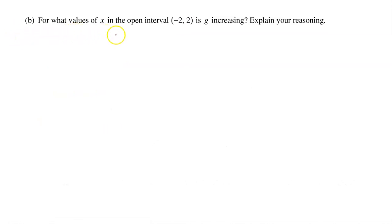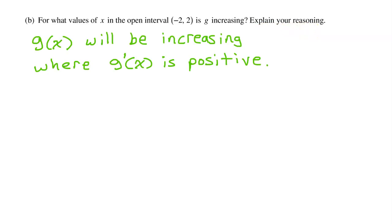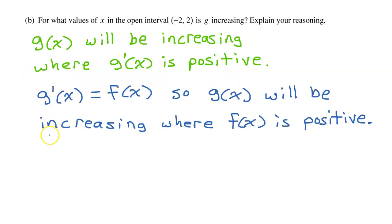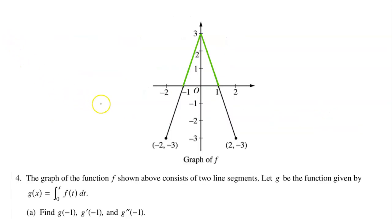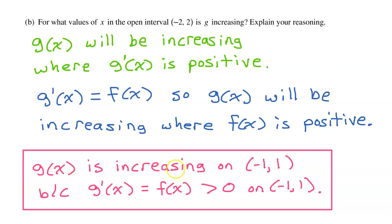Part B: For what values of x in the open interval from negative two to two is g increasing? Explain your reasoning. G of x will be increasing where g prime is positive. In part A, we found that g prime equals f of x. Therefore, g of x will be increasing where f of x is positive. Glancing at the graph of f, we see that f is positive between negative one and positive one. So g of x is increasing on the interval from negative one to positive one because g prime, which equals f of x, is positive on this interval.